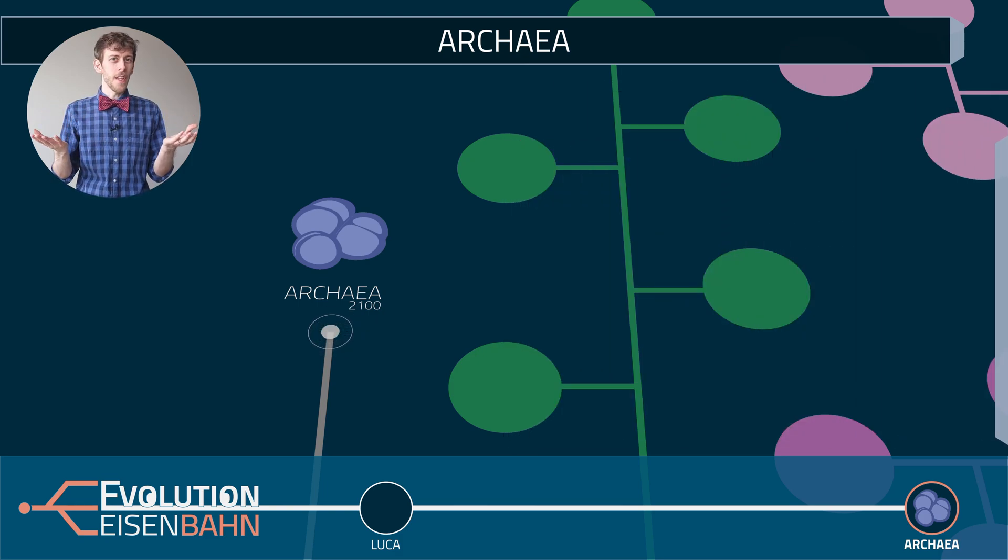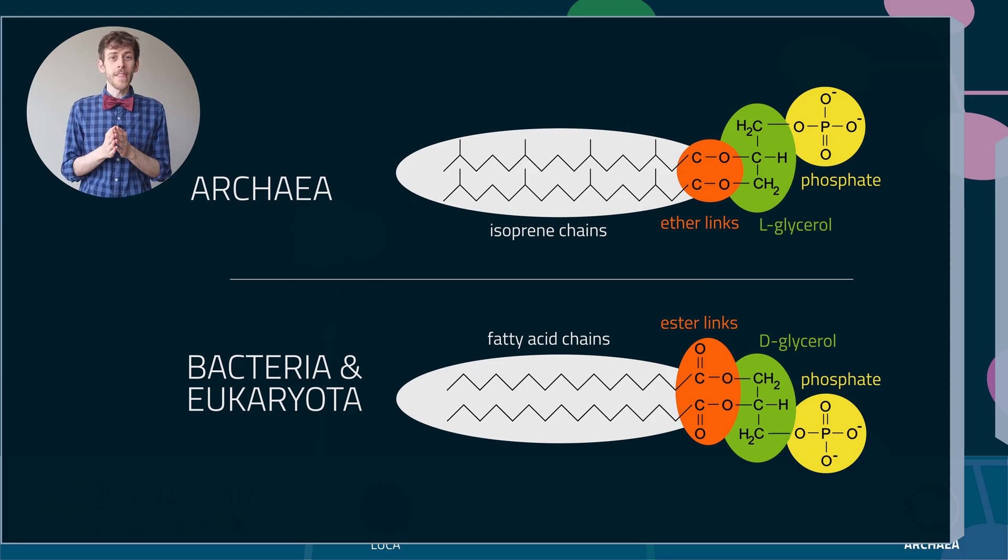So, for example, their whole cellular machinery is different. They have some elements that are like in bacteria and some elements that are like in eukaryotes, and then some elements are really unique and are only found in the Archaea. For example, their membranes are fundamentally built differently than in all other life forms. They really do their own thing.